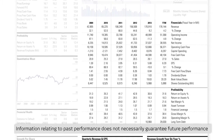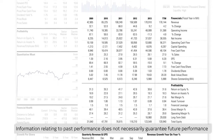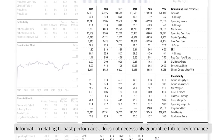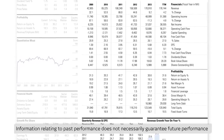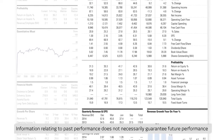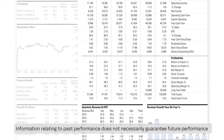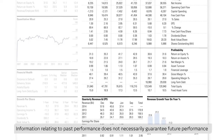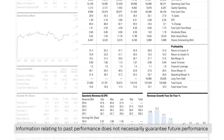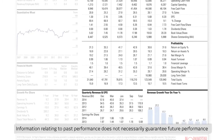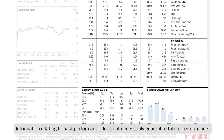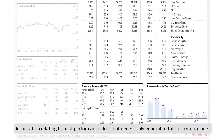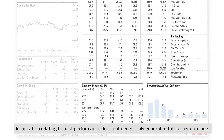The most important historical fundamental data is shown here. It includes the last five years of revenue, operating income, earnings and dividends per share, book value, and profitability ratios such as return on equity and gross margin.